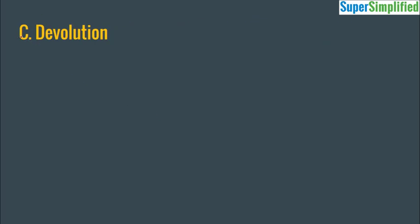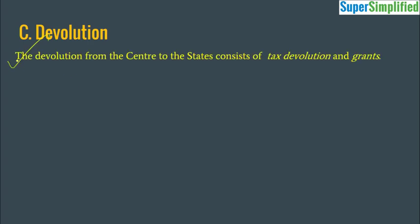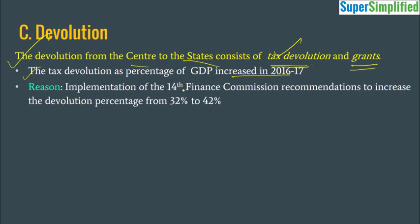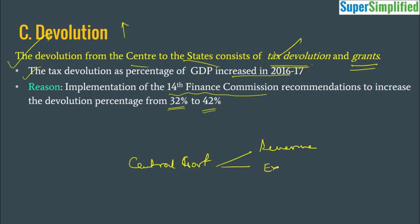Moving to Part C — devolution. The center has to transfer funds to state governments as per Finance Commission recommendations. The devolution consists of tax devolutions and grants. Tax devolution as a percentage of GDP increased in 2016-17 because of the 14th Finance Commission recommendations, which raised the devolution percentage from 32% to 42%. So Section 1 — central government finances covering revenue, expenditure, and devolution — is complete.